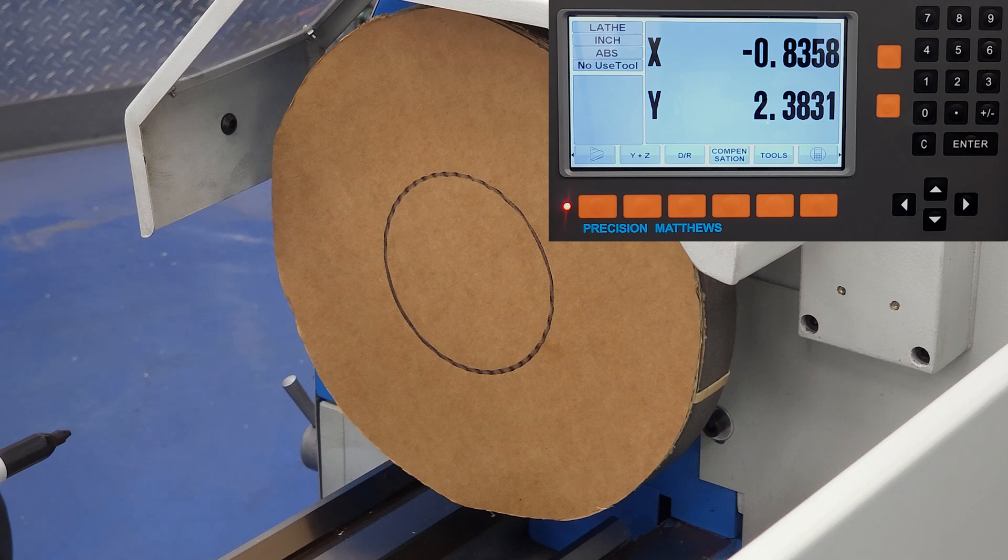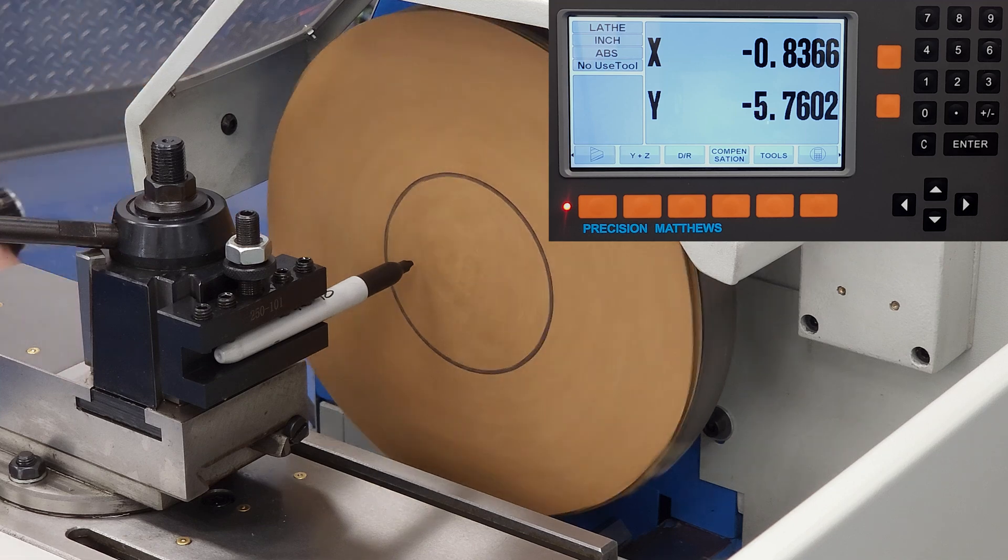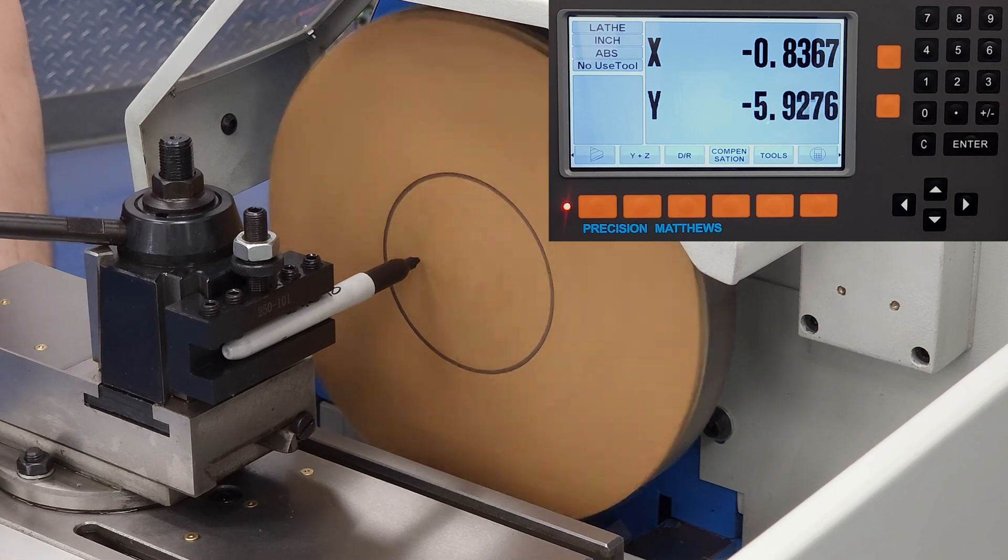So we'll just move the cross slide until it says negative 0.8365, and that cut should produce a part that is 2 inches in diameter.